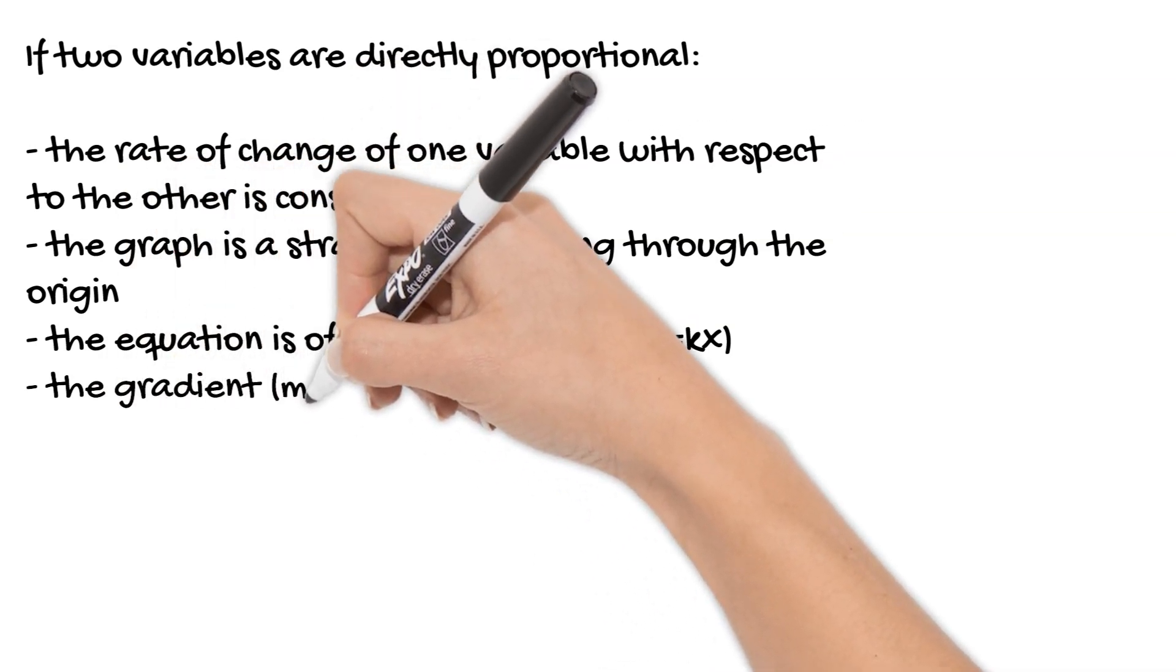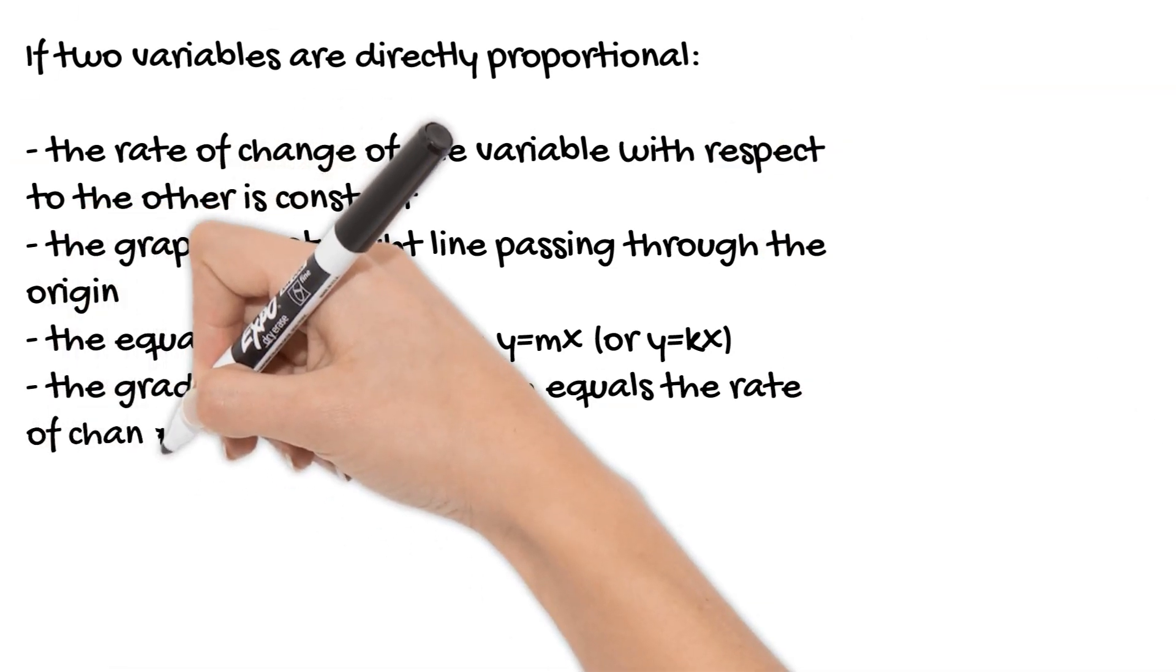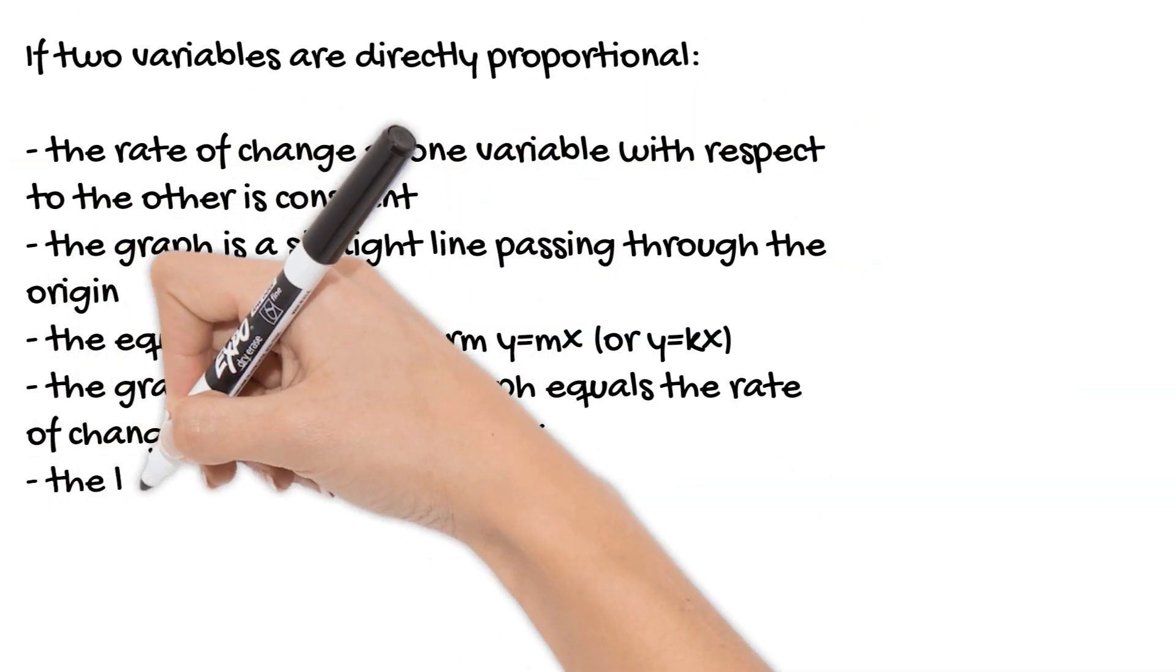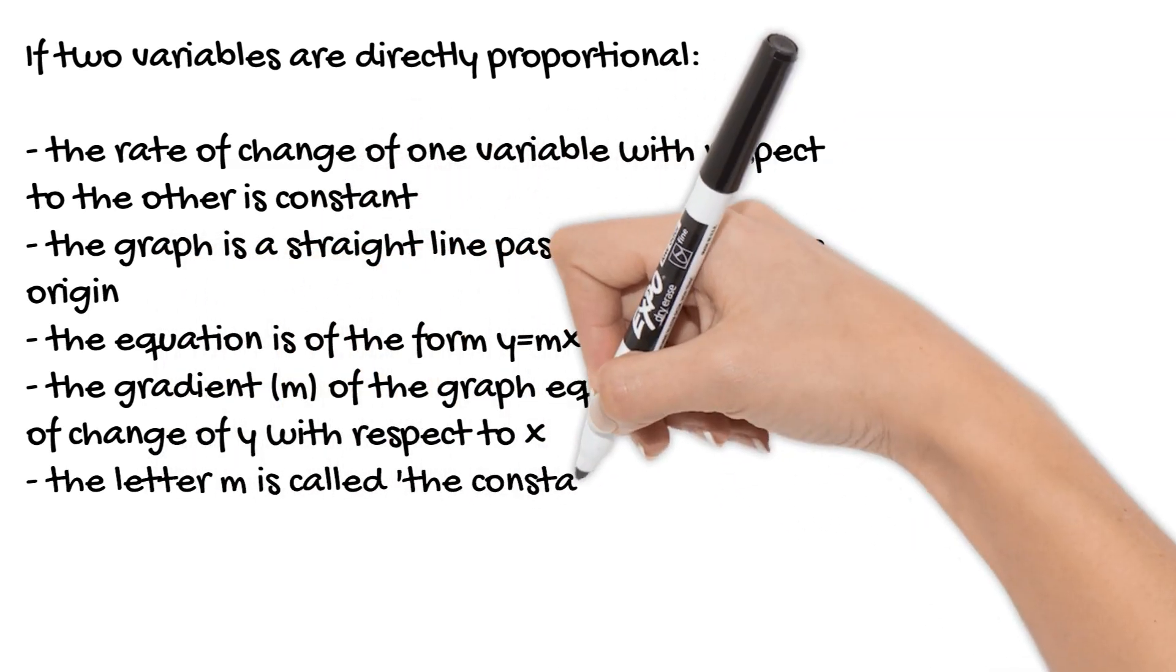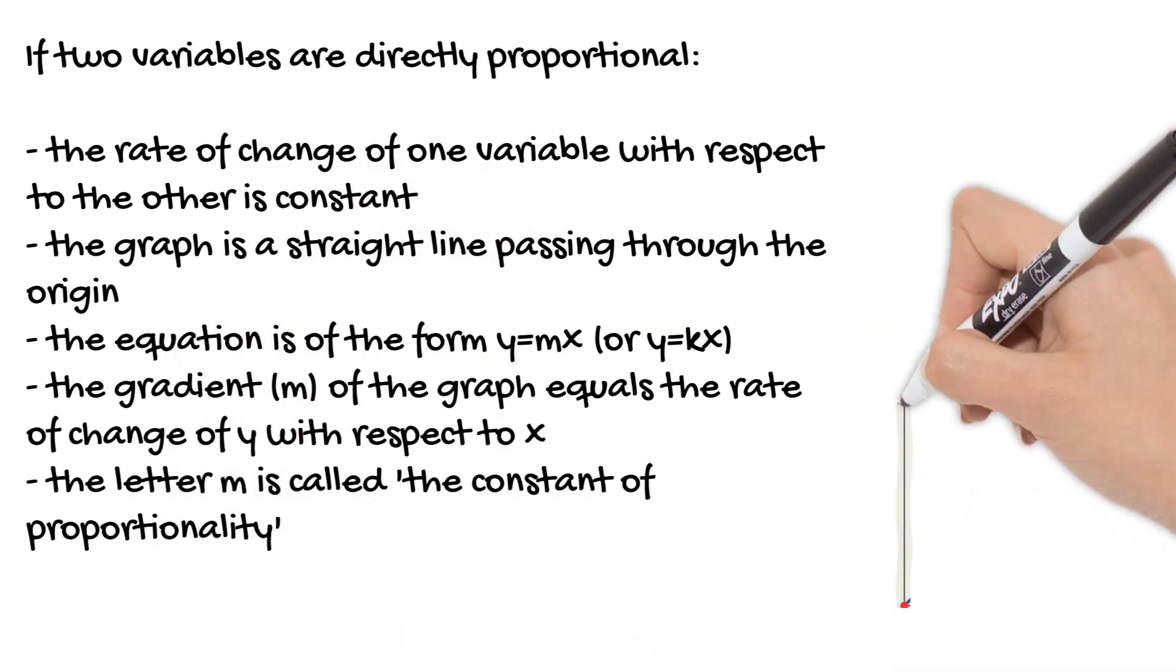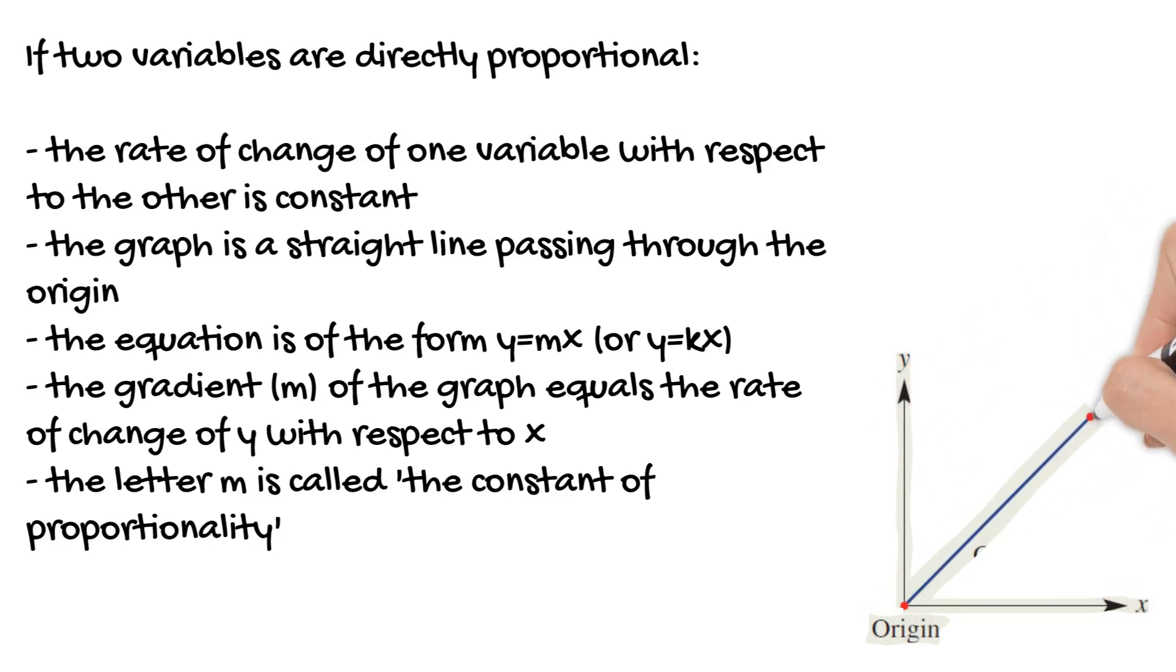So of course m, the number in front of the x, is the gradient. But when we're talking about direct proportion, we actually write our equation as y equals kx. So k is something that we call the constant of proportionality. Now it doesn't matter if you write it as y equals mx or y equals kx, but just know that when you're writing it as y equals kx, you're using the constant of proportionality.